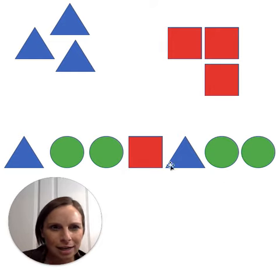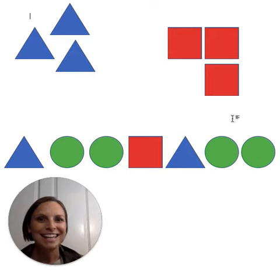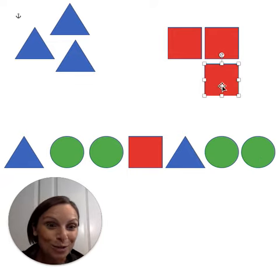Okay, let's study it. Let's see. Triangle, circle, circle, square. Triangle, circle, circle. What would go next? Yes, if we had enough room, I agree. It would be a square.